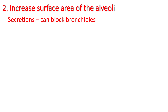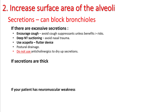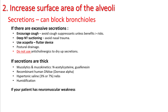Number two is increasing the surface area of the alveoli. The two most important things to remember are secretions and atelectasis. Secretions can cause problems in three forms: either they are excessive, they are thick, or the patient has neuromuscular weakness. For excessive secretions, increase cough and avoid cough suppressants. Perform deep nasotracheal suctioning while avoiding nasal trauma. You can use acapella or flutter devices. Avoid anticholinergics to dry up secretions. For thick secretions, use mucolytics and mucokinetics like N-acetylcysteine or guaifenesin. Hypotonic saline nebs are very useful, and make sure the oxygen the patient is getting is humidified.